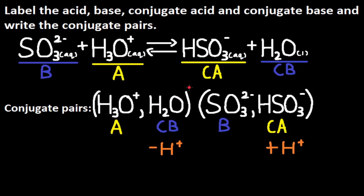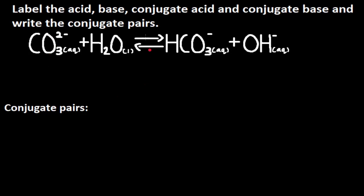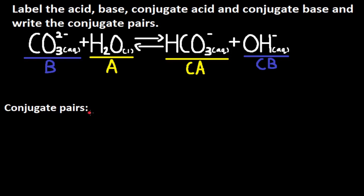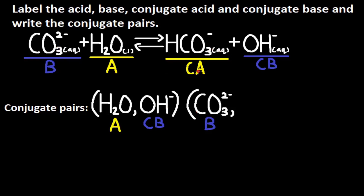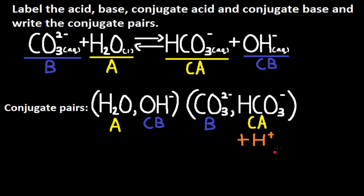Let's look at another example: CO3²⁻ reacts with H2O, producing HCO3⁻ and OH⁻. To produce HCO3⁻, H2O must donate its H⁺ ion to CO3²⁻, so H2O is the Brønsted-Lowry acid and CO3²⁻ is the Brønsted-Lowry base. Whatever the acid produces is the conjugate acid: H2O donates its H⁺ to CO3²⁻, producing HCO3⁻ as the conjugate acid, and OH⁻ is the conjugate base. To write conjugate pairs, opposites go together: H2O (acid) pairs with OH⁻ (conjugate base), and CO3²⁻ (base) pairs with HCO3⁻ (conjugate acid). Remember, the conjugate acid differs by an additional H⁺ and the conjugate base by one fewer H⁺.